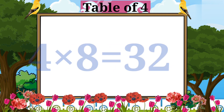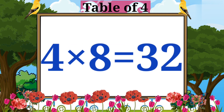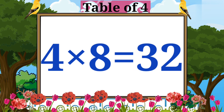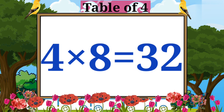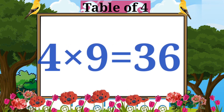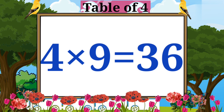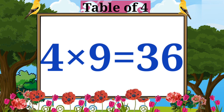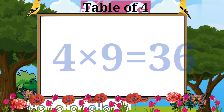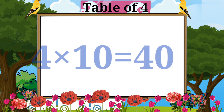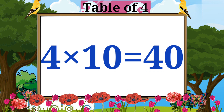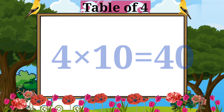Four sevens are twenty-eight. Four eights are thirty-two. Four nines are thirty-six. Four tens are forty.